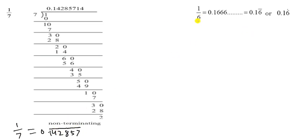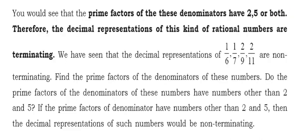Let's look at 1 by 6. It becomes 0.166666 and so on. We write this as 0.16 bar — the bar is placed only over the 6, indicating the repeating digit.